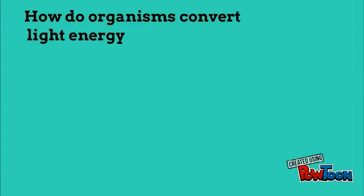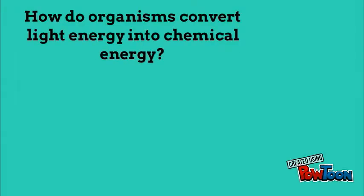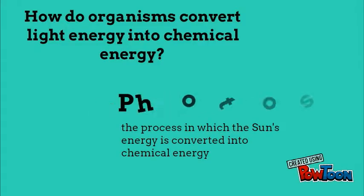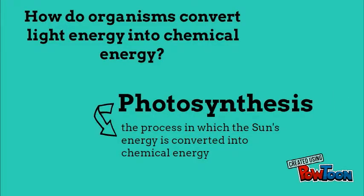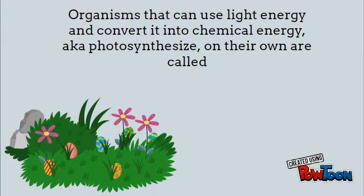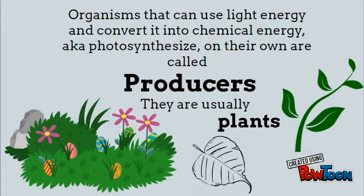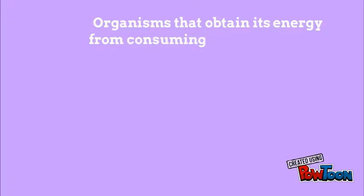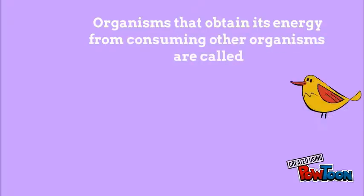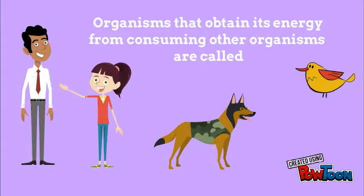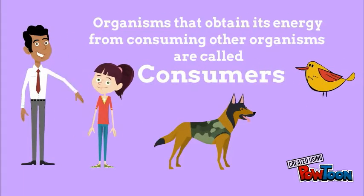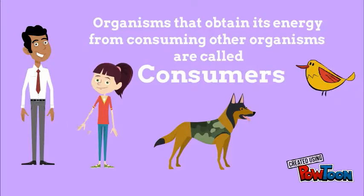How do organisms convert light energy into chemical energy? It's all thanks to an important process called photosynthesis. Some organisms can carry out photosynthesis on their own — they are called producers and are usually plants. On the other hand, many organisms cannot photosynthesize and obtain their energy by consuming other organisms. These are called consumers and include animals and humans.